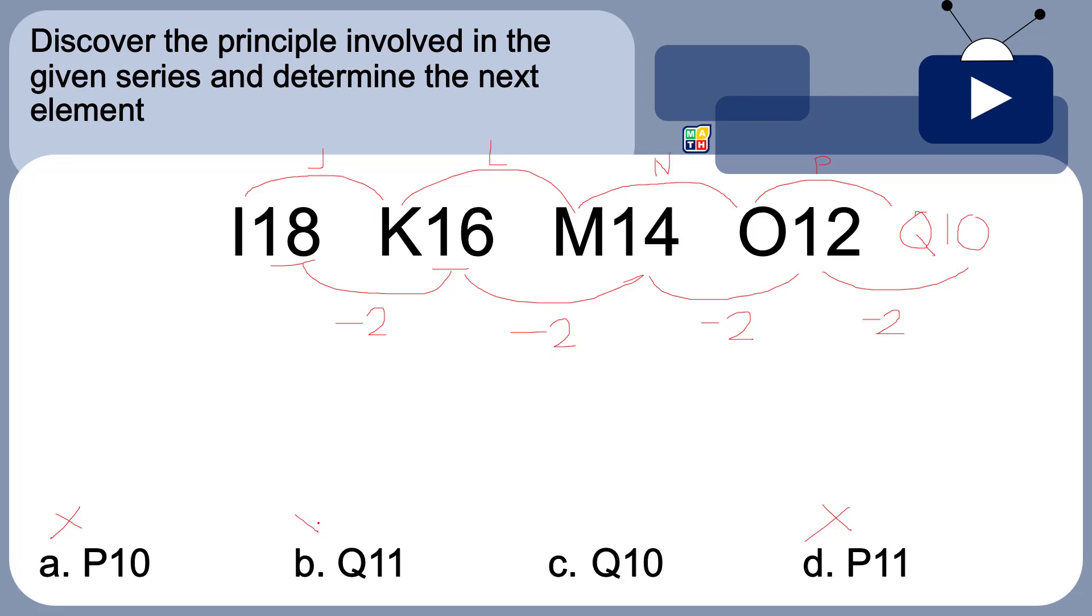Letter B is not an answer kasi in the first place, kahit by observation, even, even, even, even—here is odd. So, you could automatically even remove this and D kasi the answer here is 11. But of course, kailangan natin i-examine pa rin yan. So, again, the correct answer is letter C, which is Q10, following the principle for the letter and the number in this series.